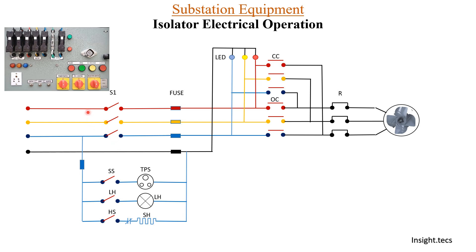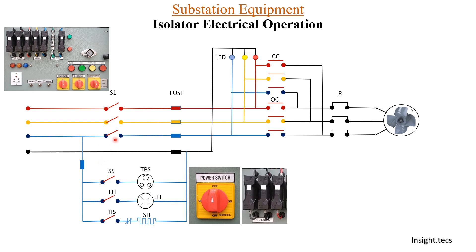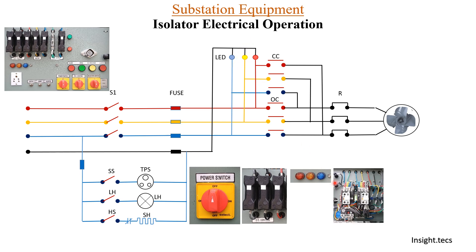The power circuit has three phases and a neutral — R, Y, B phase. S1 is the switch connecting the power supply. After the DC control fuse there is an LED that glows. After this, the contactors come into picture: CC is for closed contactor and OC is for open contactor. After this, the power supply reaches the motor through an overload relay.